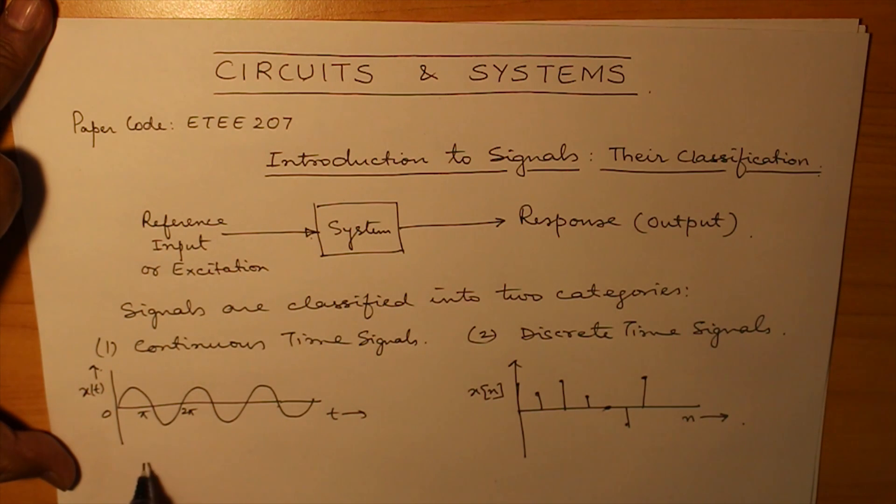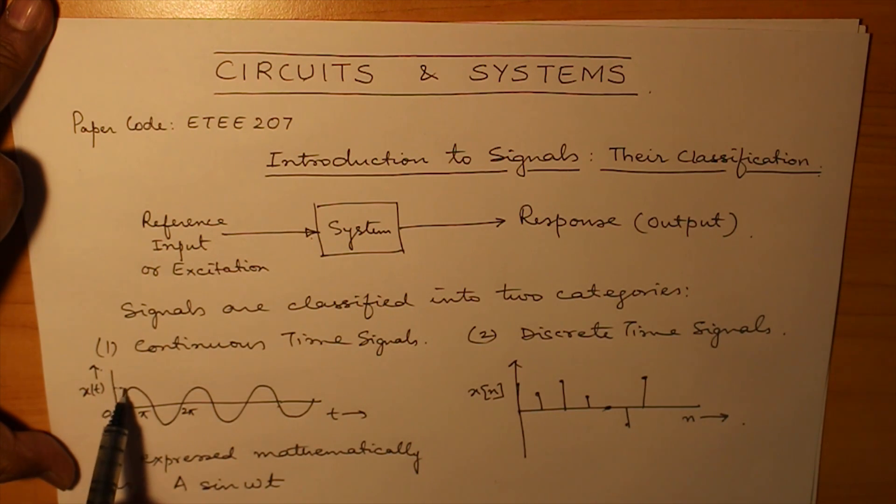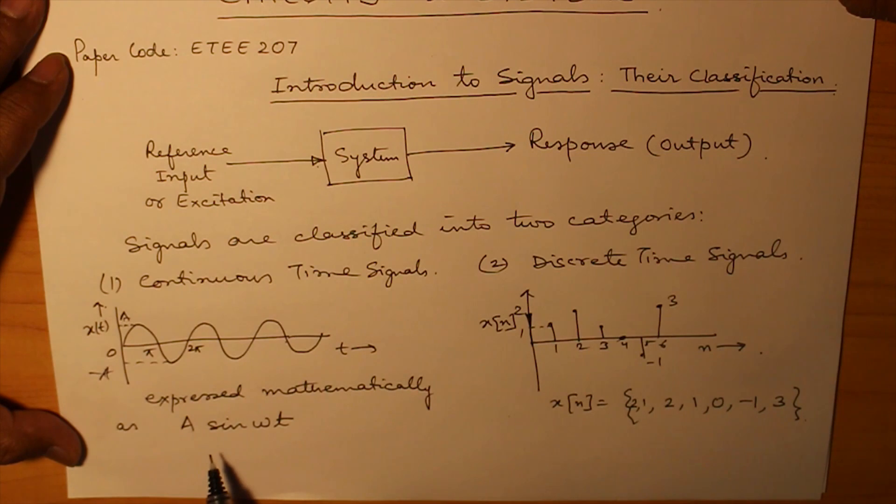Continuous time signal can be expressed as a mathematical expression. As for example, the above waveform is A sin omega t where A is the amplitude. So, the continuous time signal is expressed mathematically as A sin omega t.